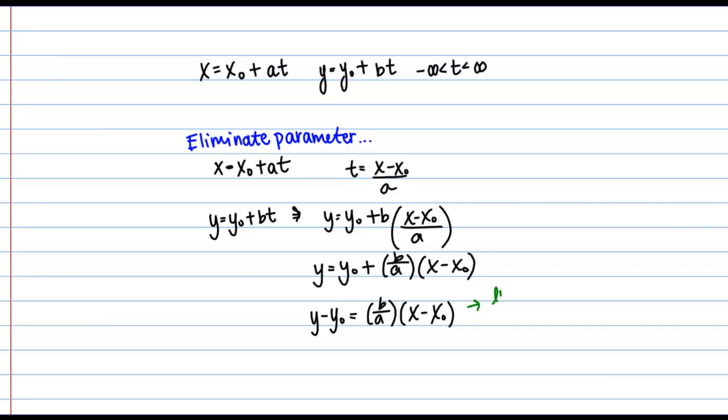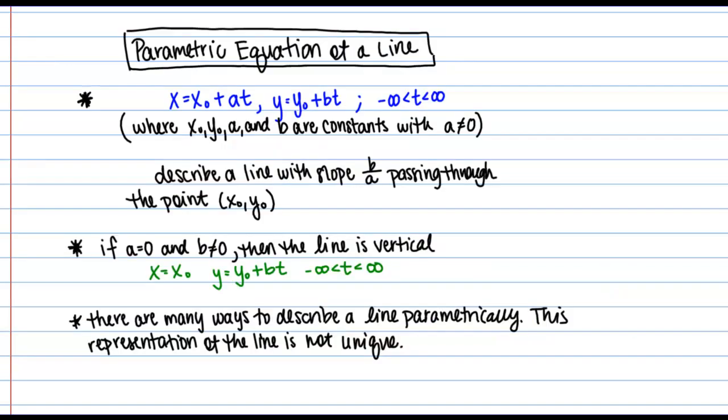This describes a line with slope B over A passing through the point (X₀, Y₀). So we've determined that the original parametric equations describe a line with slope B over A passing through the point (X₀, Y₀).